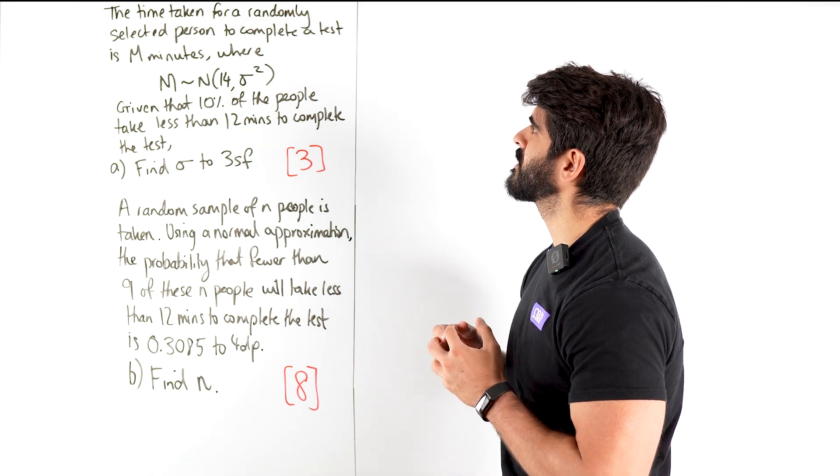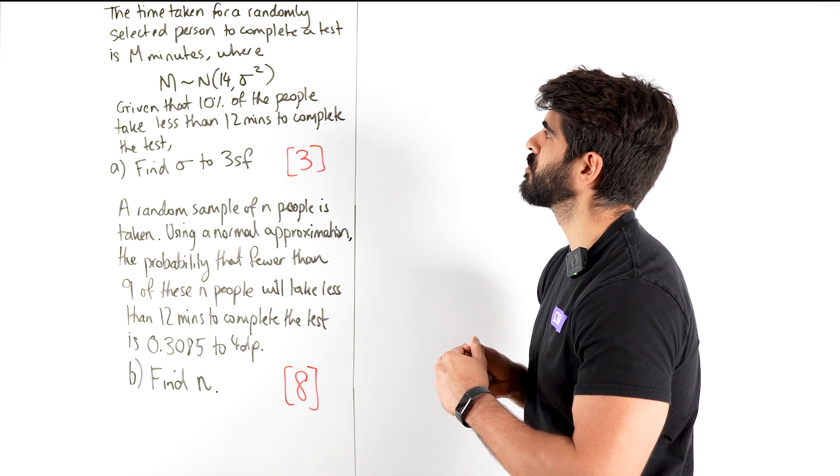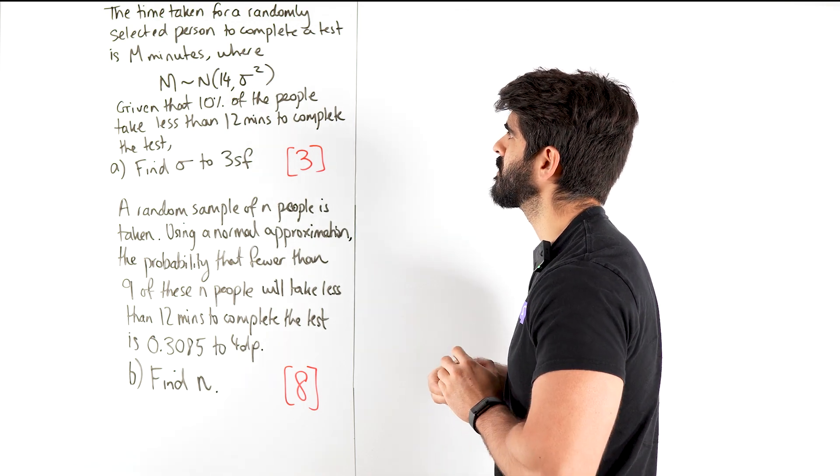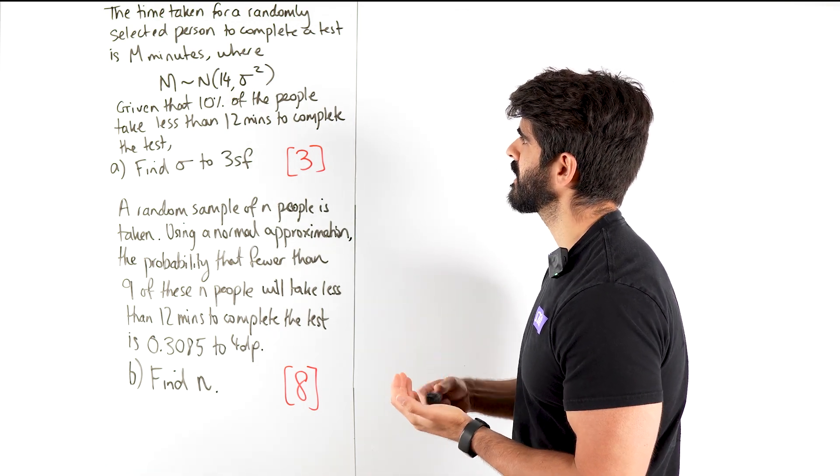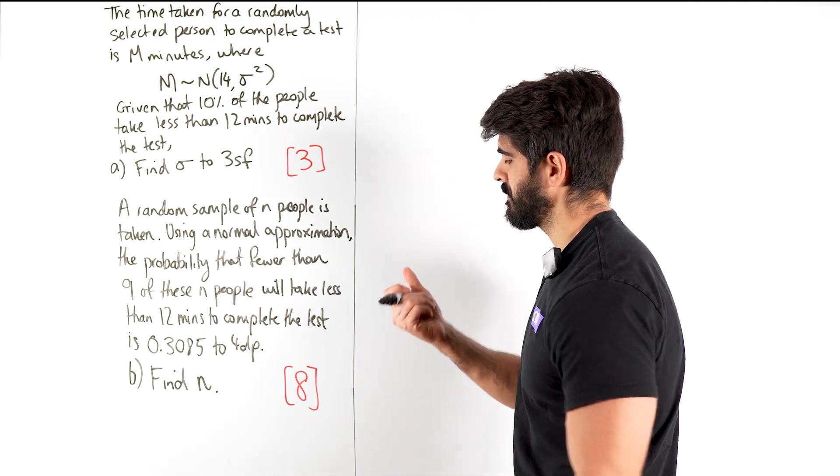The time taken for a randomly selected person to complete a test is M minutes, where M is normally distributed with mean 14 and variance sigma squared. Given that 10% of the people take less than 12 minutes to complete the test, find sigma to 3 significant figures.